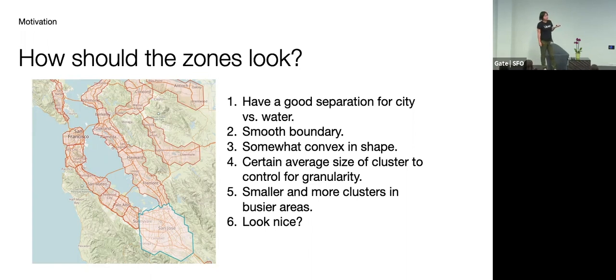And then we probably want smooth boundaries, so couriers don't need to get into the problem of crossing different multipliers when they're traveling on the map. And then they should somewhat be convex in shape so they look nice. And then we probably need to control for the granularity and the sizes of those zones. And we probably would also need different granularities for different products. And then maybe we should have smaller and more clusters in busier areas so we get the granularity of those trip distributions.